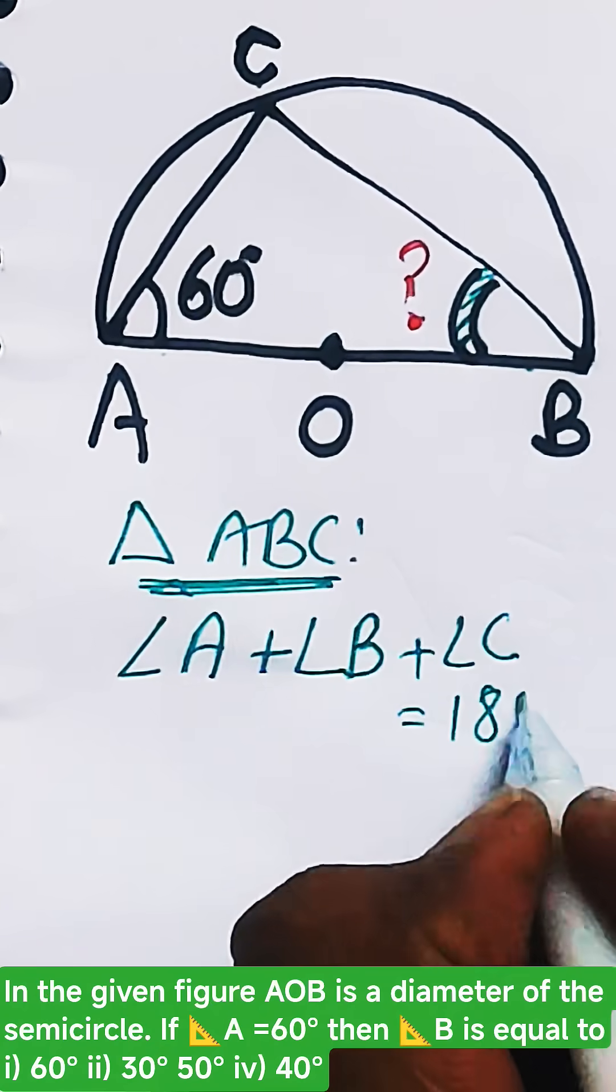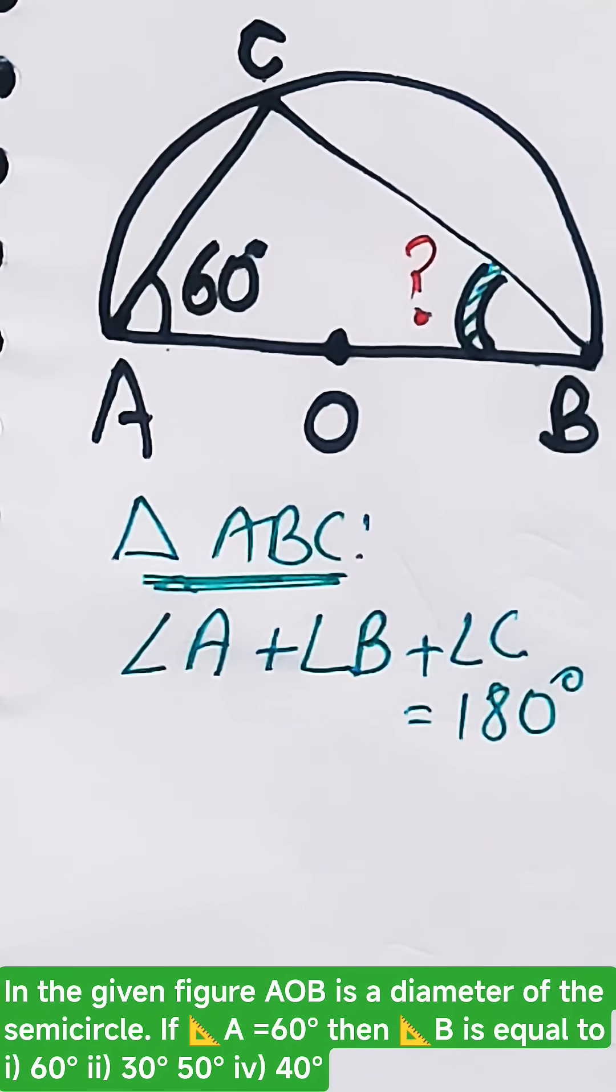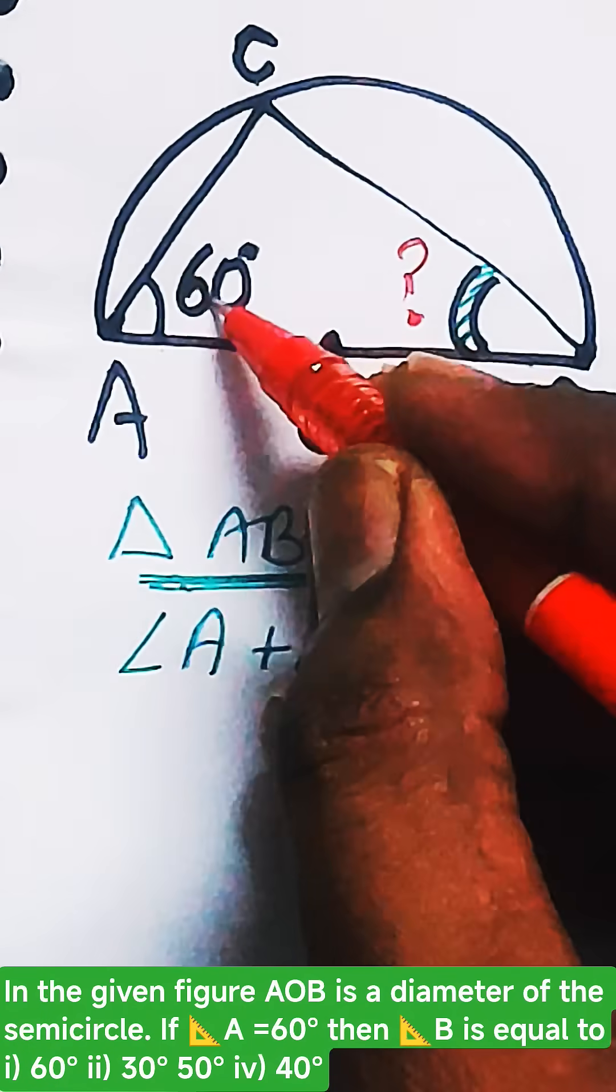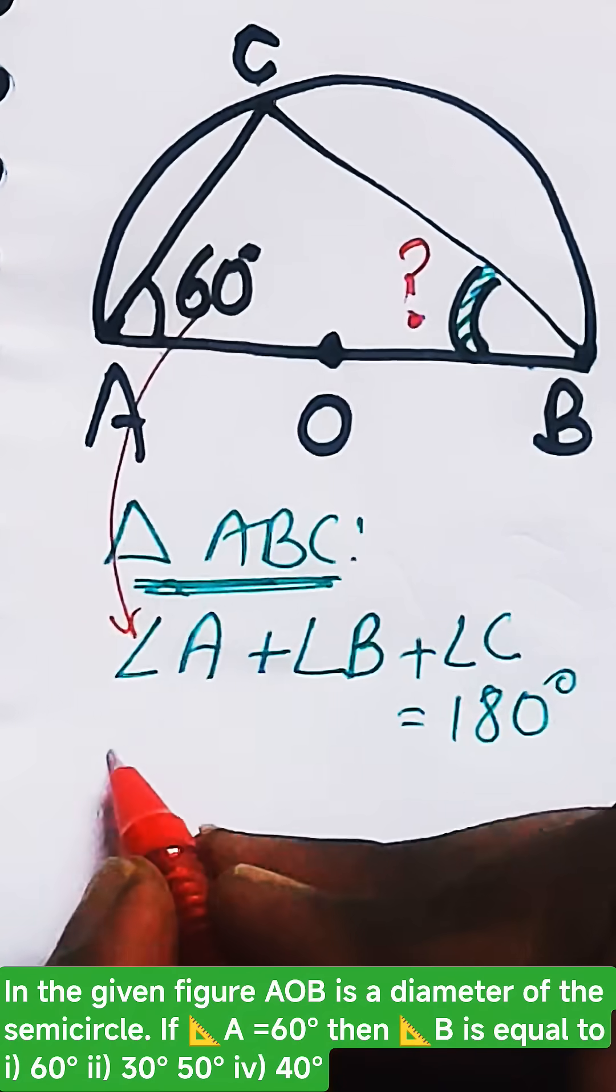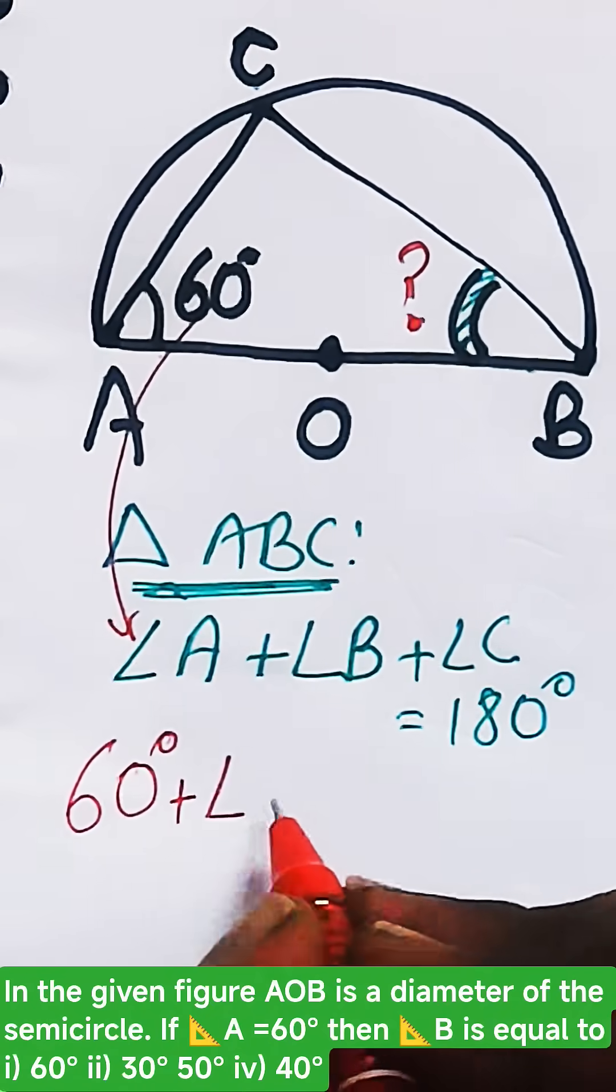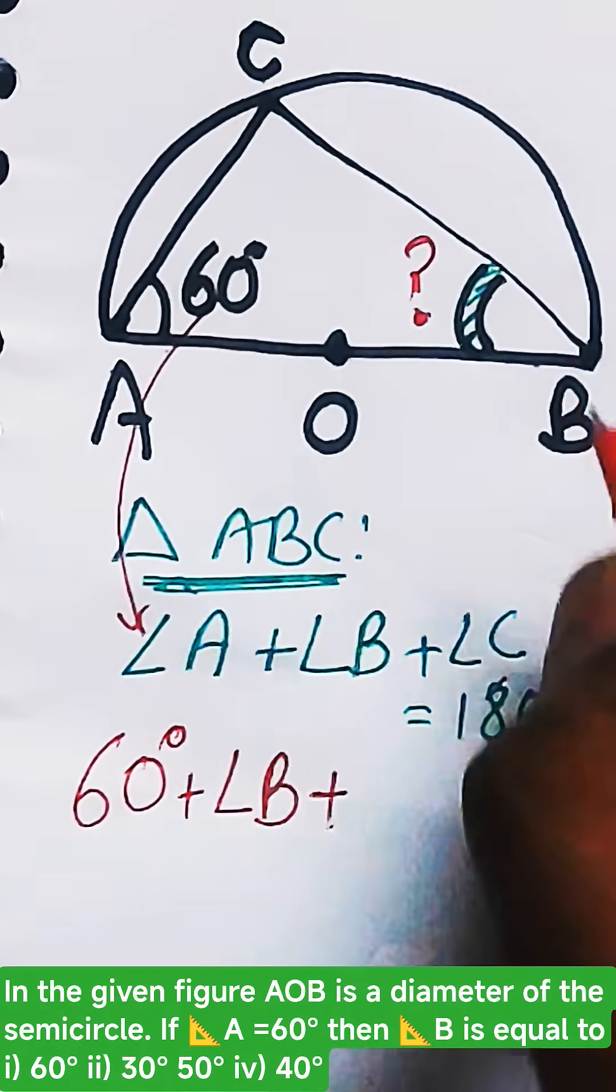This is equal to 180 degrees. Now A is known to you, that is 60 degrees, so put the value of A as 60 degrees. B we need to calculate, and what is the value of angle C?